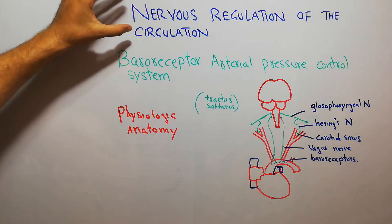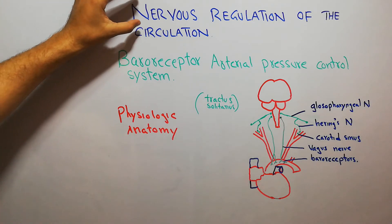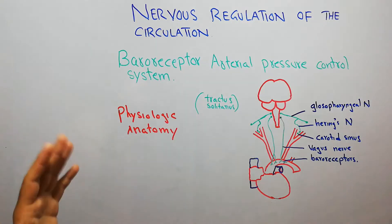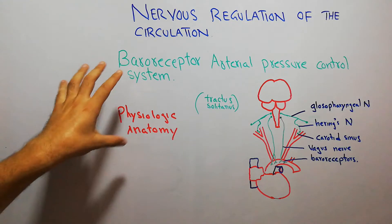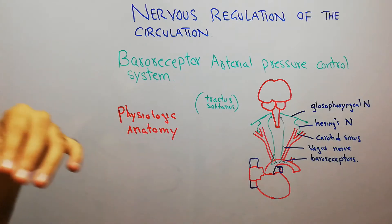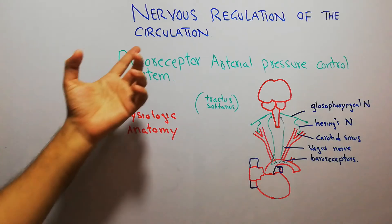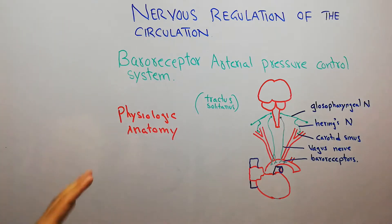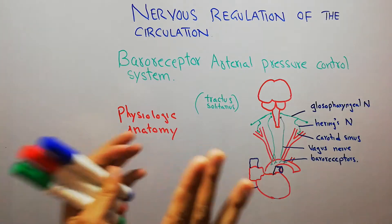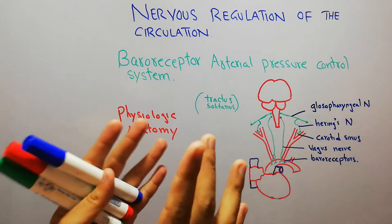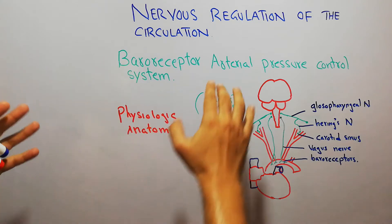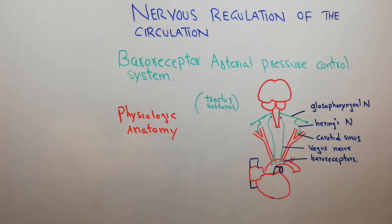Broadly, we are discussing the nervous system regulation — the nervous regulation of the circulation, or the involvement of the nervous system in the control and regulation of the circulation. The baroreceptor arterial pressure system is one of the most important systems which plays an important role in controlling arterial pressure.